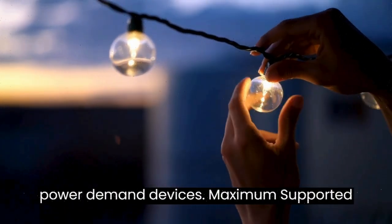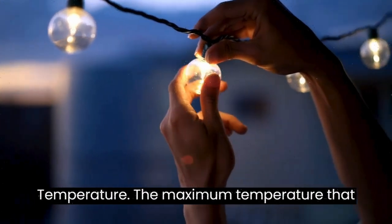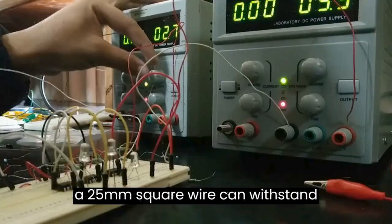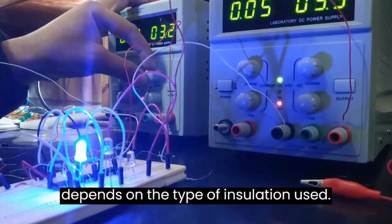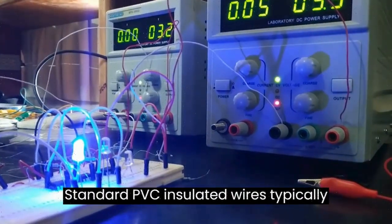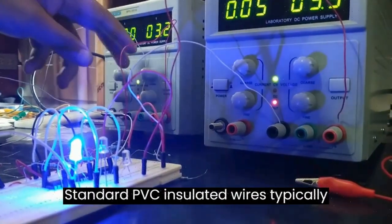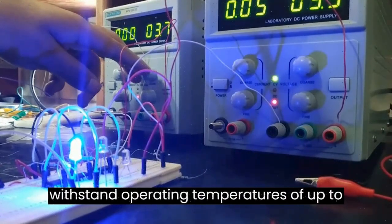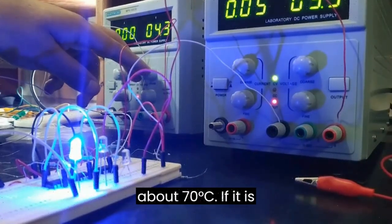Maximum supported temperature: The maximum temperature that a 25 millimeter square wire can withstand depends on the type of insulation used. Standard PVC insulated wires typically withstand operating temperatures of up to about 70 degrees Celsius.